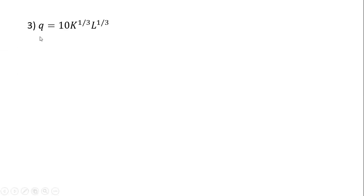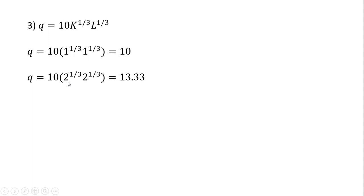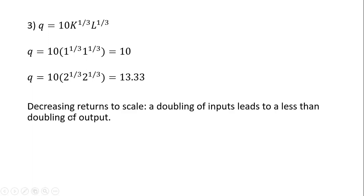In example 3, we have this production function. We'll start with an input mix where K equals 1 and L equals 1, and at that input level, this firm would produce 10 units of output. What would happen if we doubled our inputs? Plugging 2 and 2 in for K and L respectively, output would be 13.33 units. We doubled our inputs and output went up less than two times, so we have decreasing returns to scale — a doubling of inputs leads to a less than doubling of output.